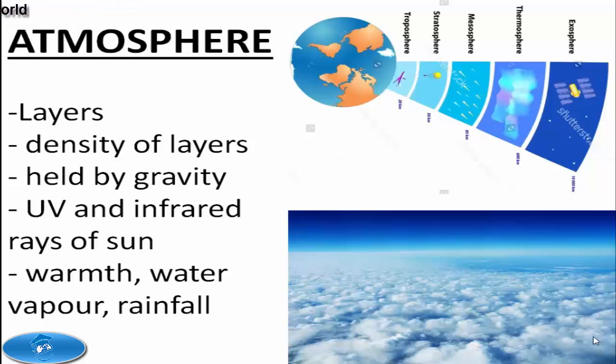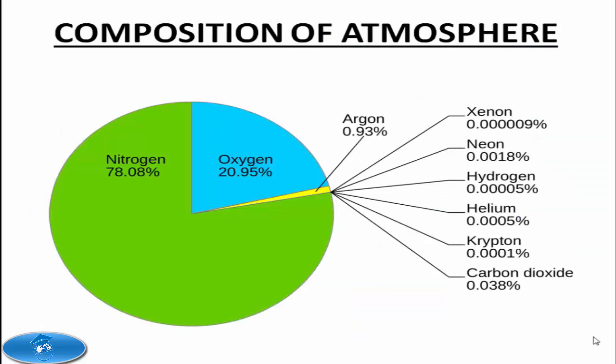It is held close to the Earth by gravity. The atmosphere protects the Earth from harmful ultraviolet and infrared rays of the sun. It has oxygen and nitrogen, the life-sustaining gases. It helps in retaining the necessary warmth on the Earth and helps in the circulation of water vapor, which is the source of rainfall.